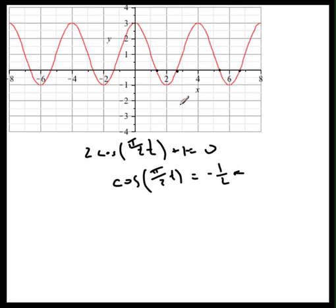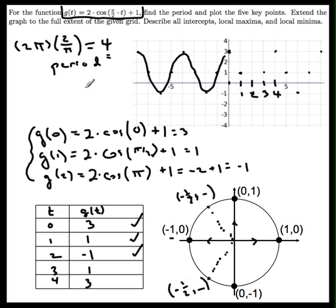But hopefully this has helped you see how to use the five-point, five-key-value method to produce a graph of a trigonometric function.